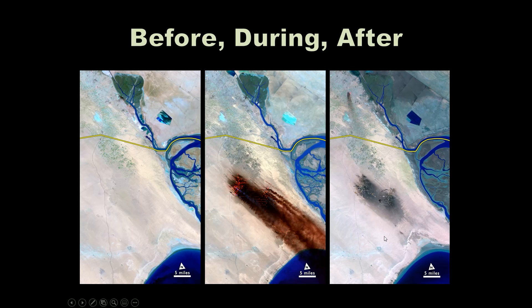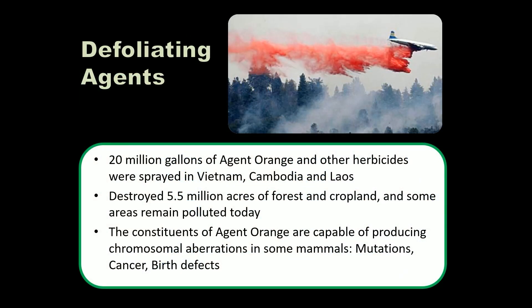About 20 million gallons of Agent Orange and other herbicides were sprayed in Vietnam, Cambodia, and Laos, destroying approximately 5.5 million acres of forest and cropland. Some areas remain polluted today. The constituents of Agent Orange are capable of producing chromosomal aberrations — mutations in mammals — which can lead to cancer and birth defects, which are seen at higher frequencies in those populations.